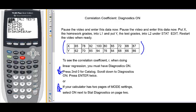Now, when I do stat calculate, number 4 for linear regression, I'm going to go down to calculate because everything is already fixed up.